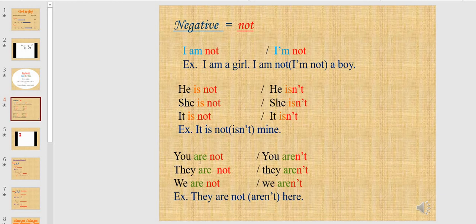Here we have the plural subject pronouns: you, they, and we. You are not — short form: you aren't. They are not — short form: they aren't. We are not — short form: we aren't. For example: they are not here, or they aren't here.